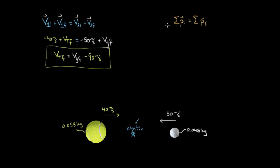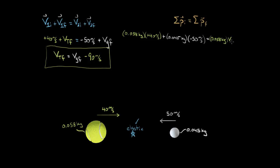The formula for momentum is mass times velocity. The initial momentum of the tennis ball is 0.058 times positive 40, plus the initial momentum of the golf ball, 0.045 times negative 50. Again, you have to be careful with negative signs — momentum is also a vector. That initial momentum should equal the final momentum: 0.058 times vt final plus 0.045 times vg final.